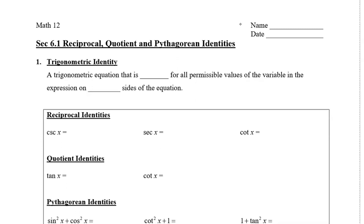So what is a trigonometric identity? It is a trigonometric equation that is true for all permissible values of the variable in the expression on both sides of the equation. So let me show you what a trig identity looks like. Here are three: we have the reciprocal, quotient, and Pythagorean identities.